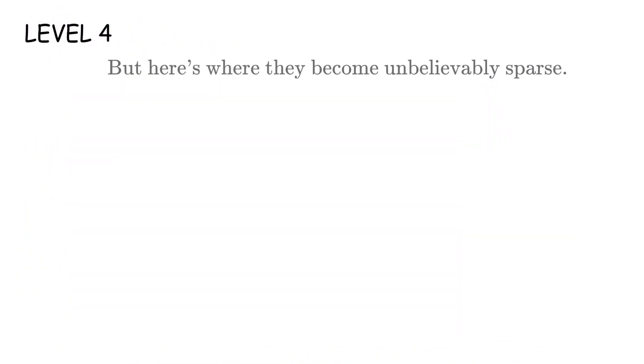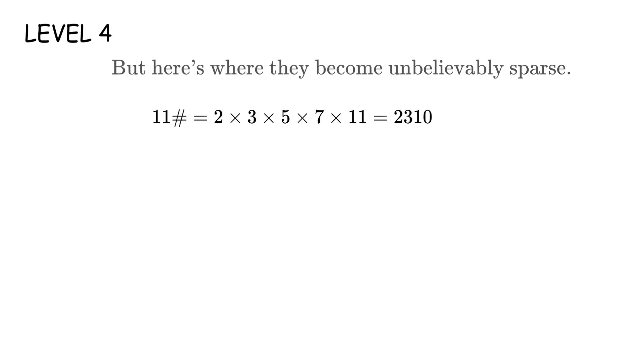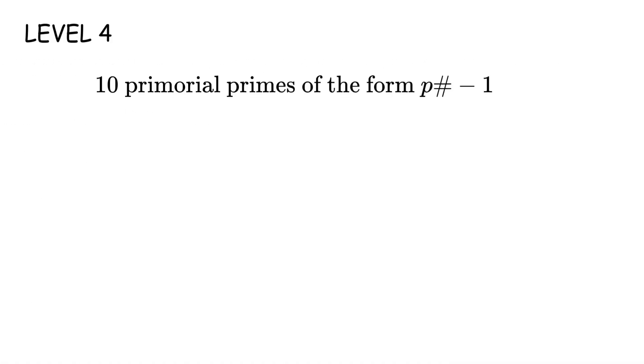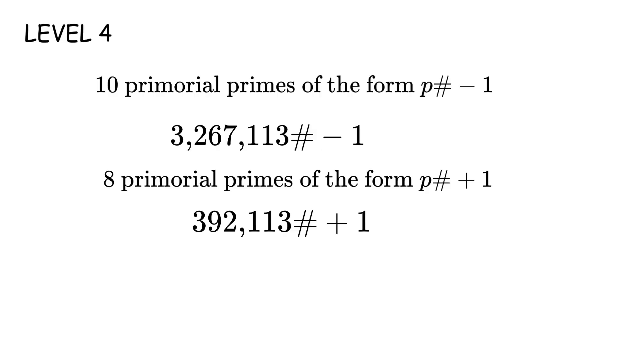But here's where they become unbelievably sparse. 11 sharp equals 2,310. 11 sharp minus 1 equals 2,309, which is prime. 13 sharp plus 1 is prime. 13 sharp minus 1 is not. We keep going. 19 sharp minus 1 is prime. The thing is, we've only found 10 primorial primes of the form p sharp minus 1. The largest is 3,267,113 sharp minus 1. And we've only found 8 primorial primes of the form p sharp plus 1. The largest known is 392,113 sharp plus 1. That number has 169,966 digits.